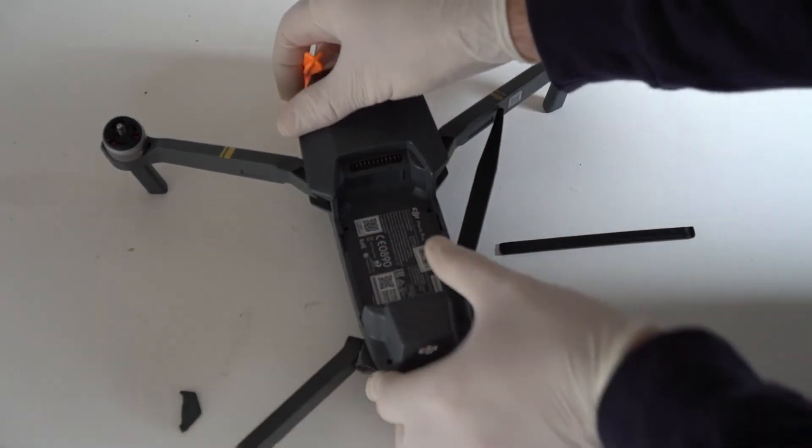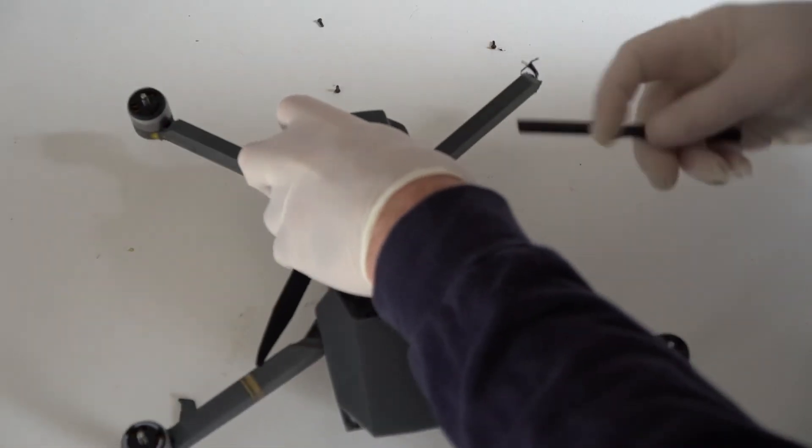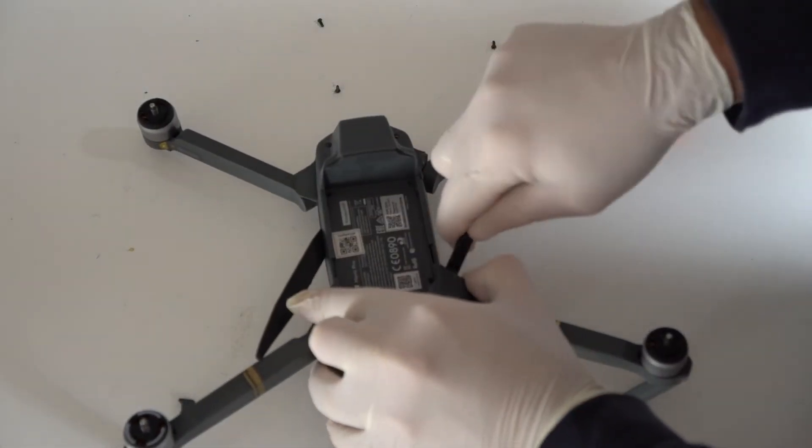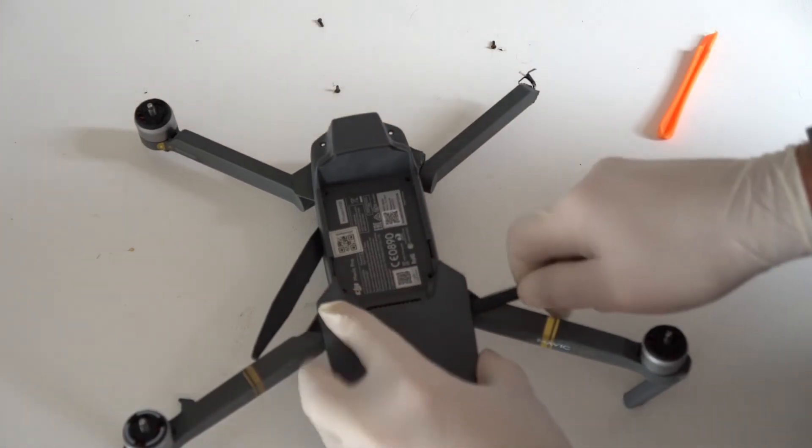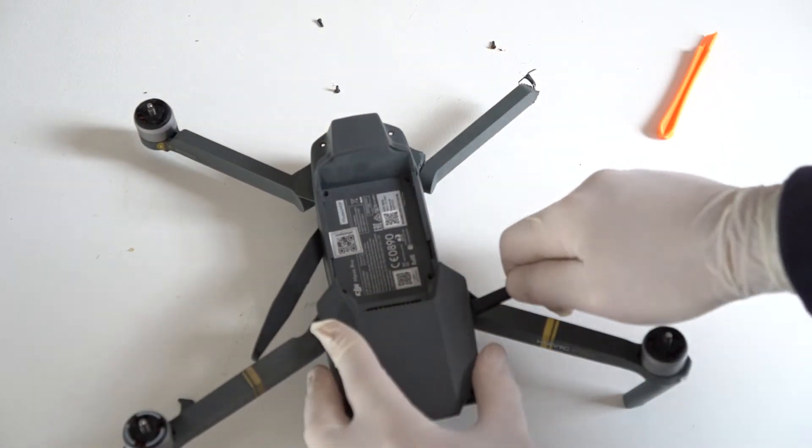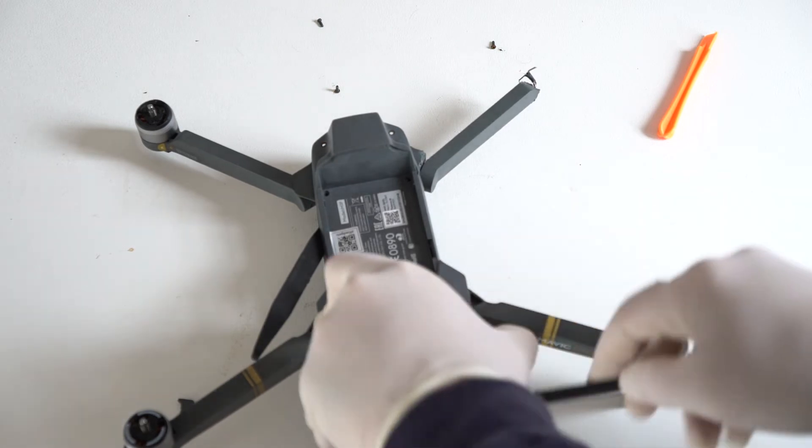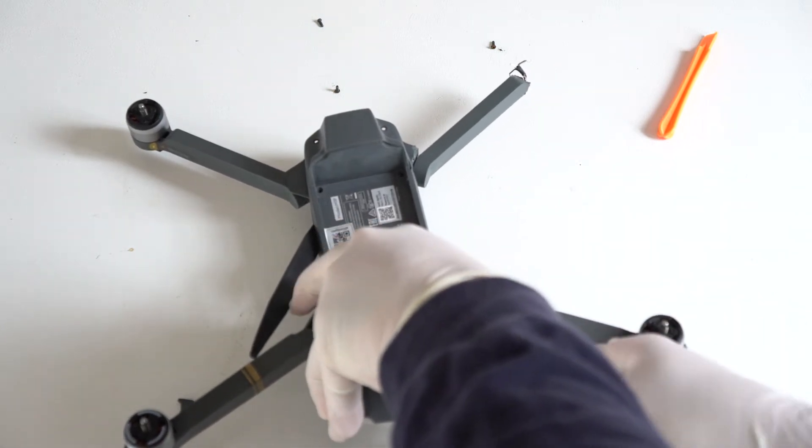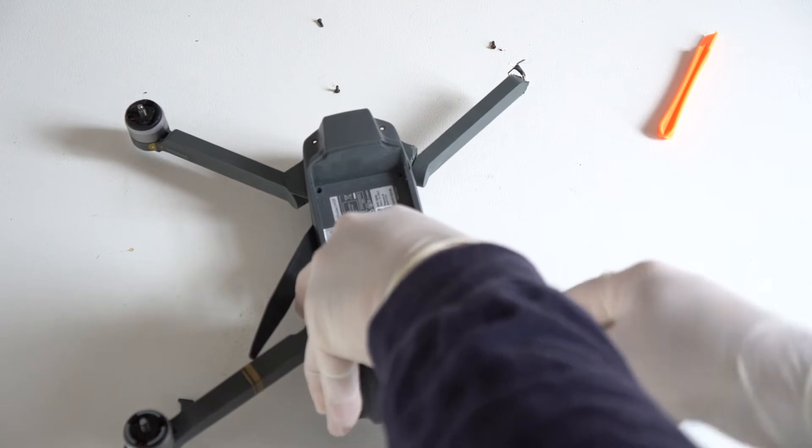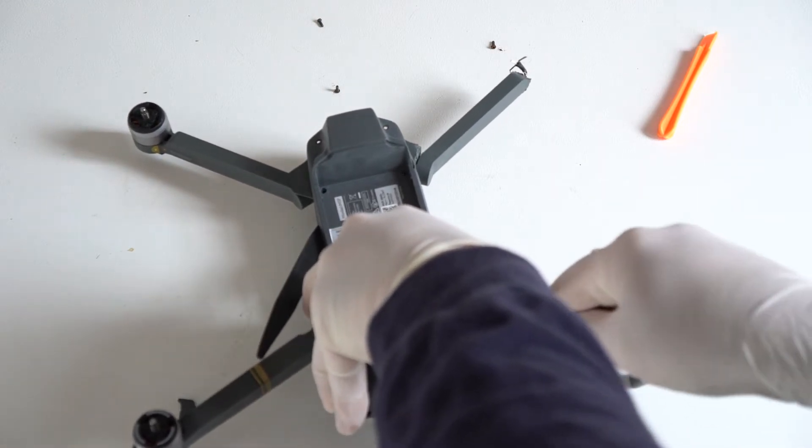I would suggest getting plastic prying tools because this does not damage the middle frame of the Mavic Pro. I've found in the past that if you have steel prying tools or you're a little bit too rough, then you can damage the middle shell.